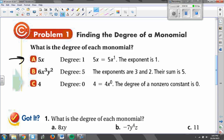Well, I know that 5x really is like 5x to the first power. 5x to the 1, so the exponent that's on my x is a 1. And since that's my only letter, that's my only exponent, so my degree is just 1.